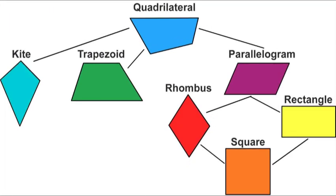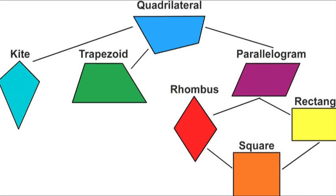Quadrilaterals — they are polygons. Quadrilaterals have four sides. We can classify them like a family tree — they're all related and different. Let's see.